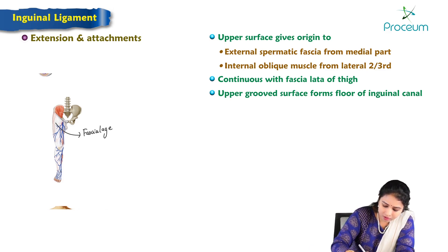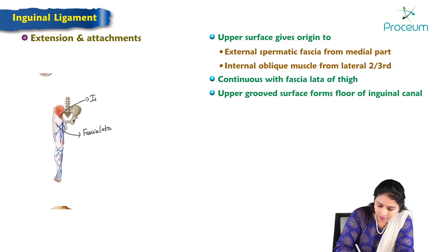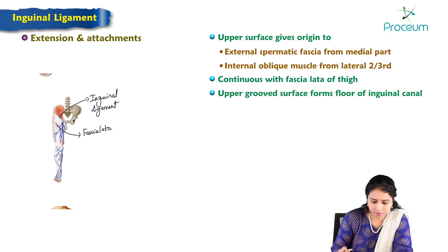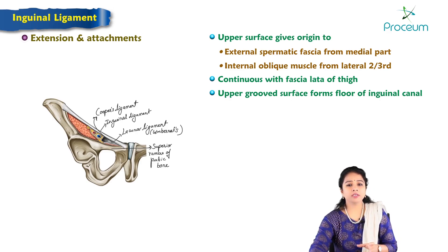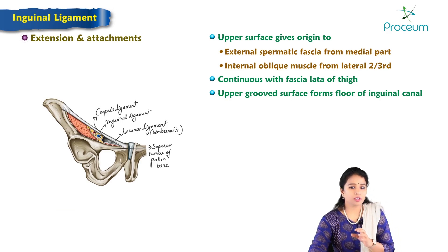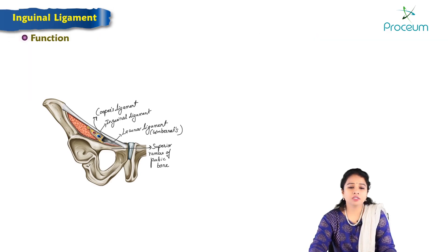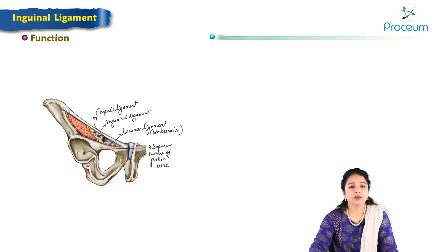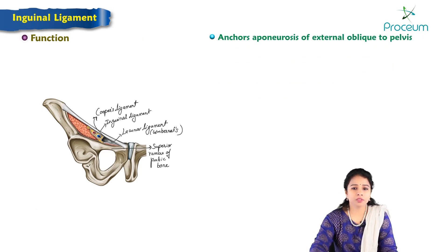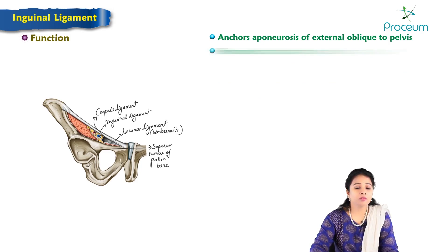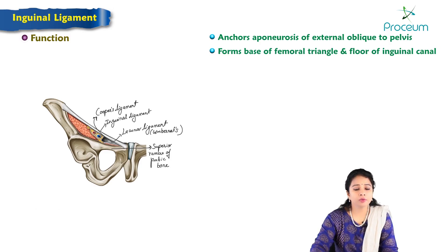Here we can see the inguinal ligament continuing with the deep fascia of the thigh, which is called the fascia lata. The upper grooved surface of the medial part of the inguinal ligament forms the floor of the inguinal canal. The main function of the inguinal ligament is to anchor the aponeurosis of the external oblique muscle to the pelvis. It also forms the base of the femoral triangle and the floor of the inguinal canal.